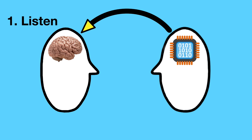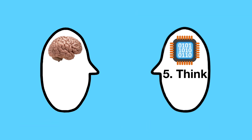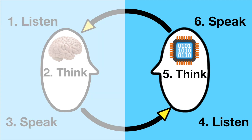So there it is. Interaction is a cyclic process in which the human and the computer alternately listen, think, and speak. Your job is on the right side of this figure. You have to program the computer to listen, and to think, and to speak. Now, the true value of any definition is the insight that it offers into the term being defined. So let's use this conversational metaphor to better understand how to design for interactivity.